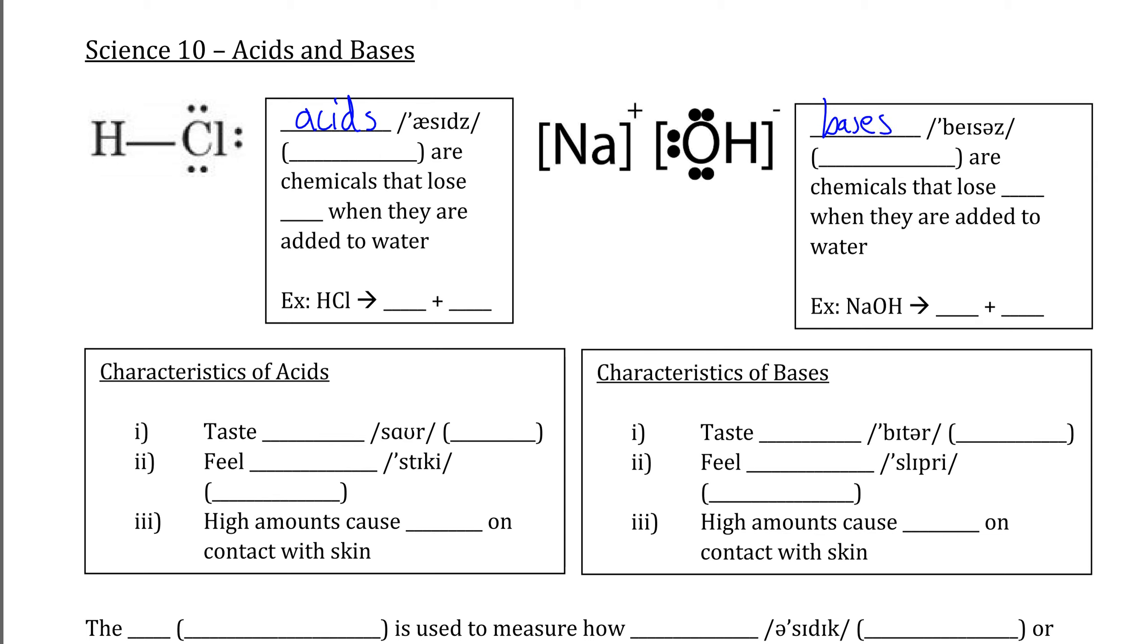The definition of acids and bases is based on what happens when we put them into water. For example, when we put an acid like HCl into water, the hydrogen, the H+ ion that is on its structure, separates and we end up with HCl becoming H+ and Cl-. The two atoms form separate ions from each other, and the H+ being there is what makes HCl an acid.